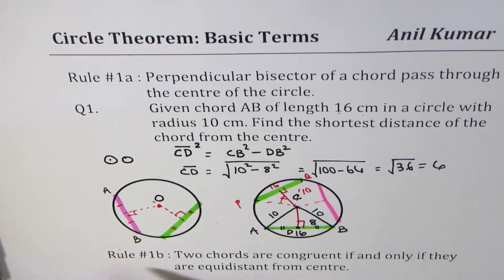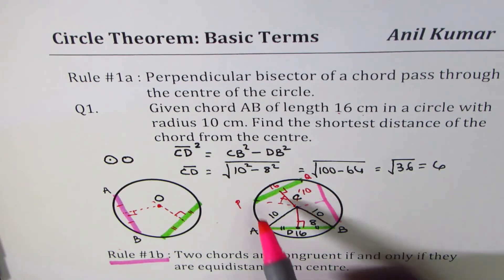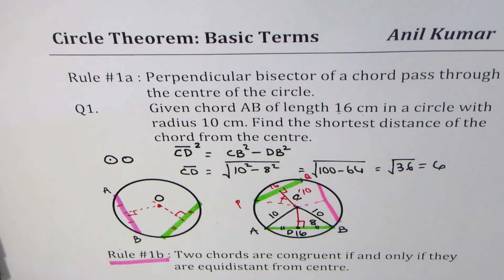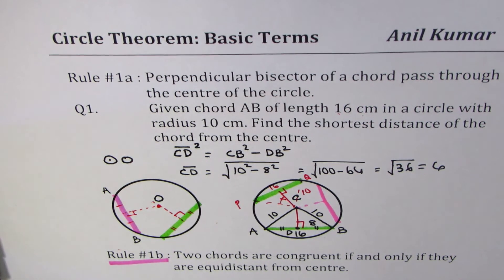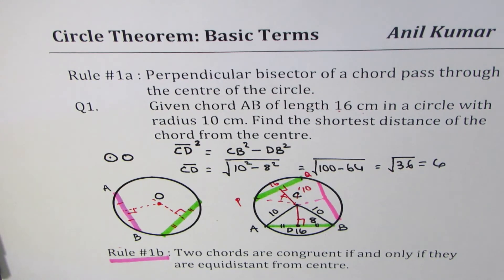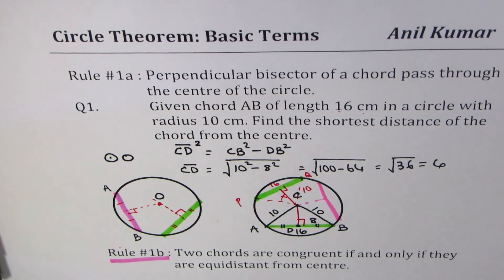That gives us a very important relation, which I am mentioning as Rule 1b: two chords are congruent if and only if they are equidistant from the center. Any two chords at the same distance from the center are congruent — they are exactly the same. Remember: the perpendicular bisector of a chord passes through the center, and two chords are congruent if their distance from the center is the same. Don't worry about rule numbering; focus on the concept. You can share and subscribe to my videos and feel free to post questions. Thank you and all the best.